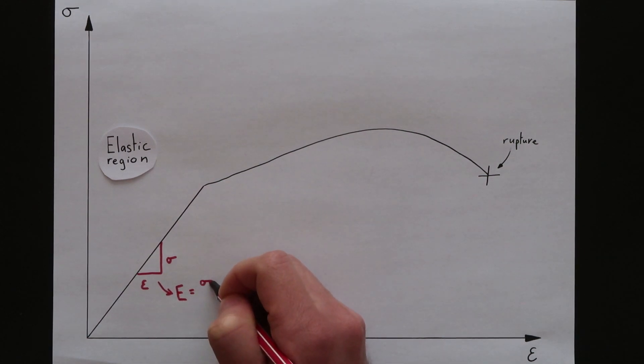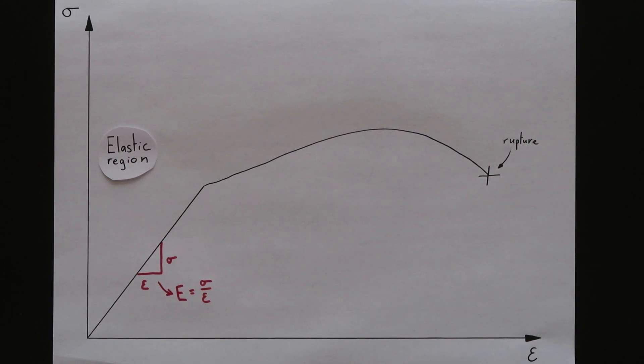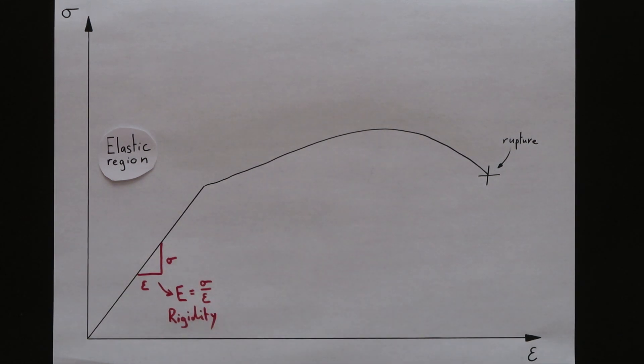This brings us to the first notion, rigidity. Rigidity is directly correlated to the Young's modulus. The greater the Young's modulus the greater the rigidity.